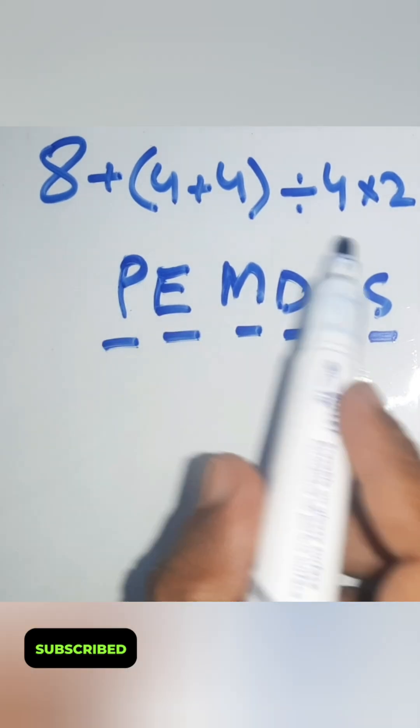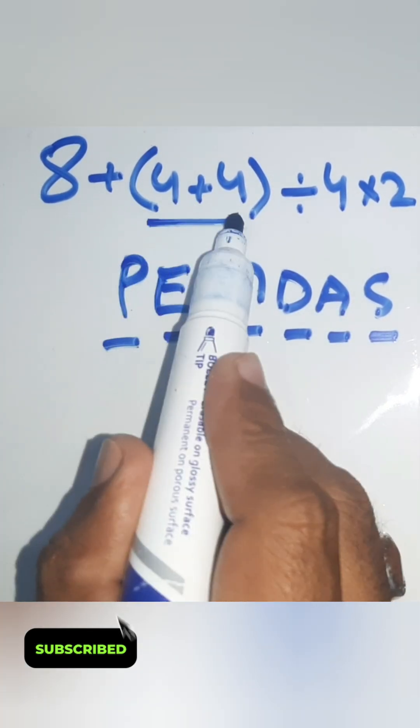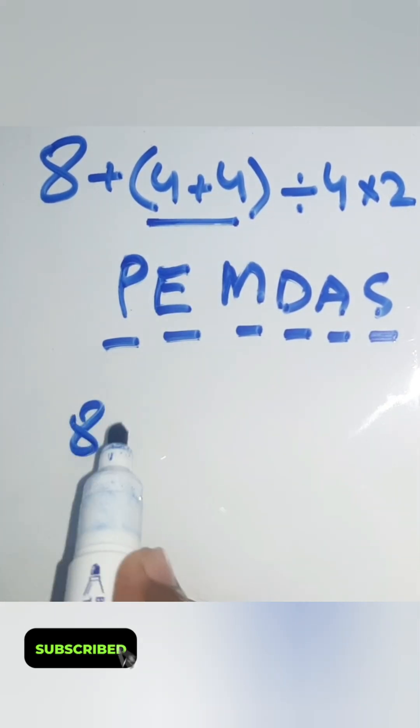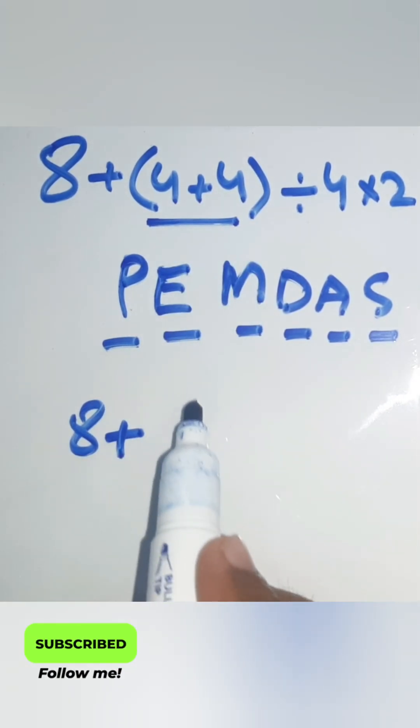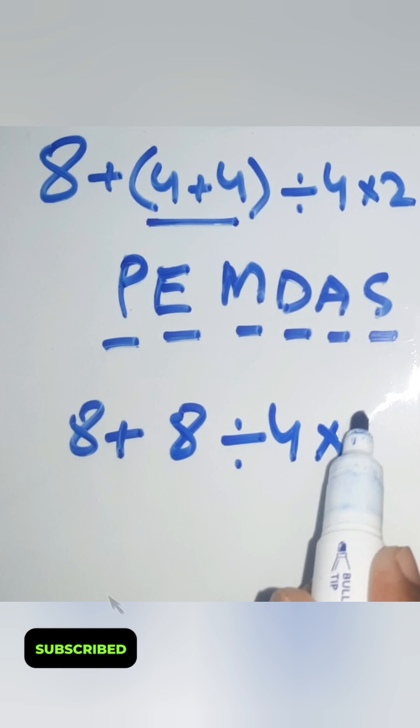So in this expression, first we do parenthesis. 8 plus 4 plus 4 gives us 8 divided 4 times 2.